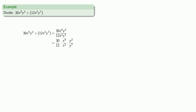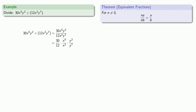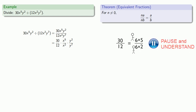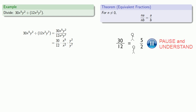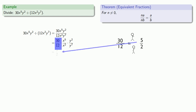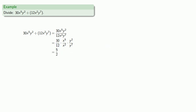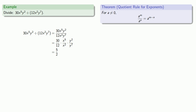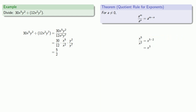If there's a common factor in numerator and denominator, we can remove it. So 30 is 6 times 5, and 12 is 6 times 2. We can remove the common factor and reduce the fraction — so instead of 30 twelfths, we write 5 halves. This next fraction, x to the fifth over x to the second, we can use the quotient rule for exponents: that's x to the power of 5 minus 2, which is x to the third.